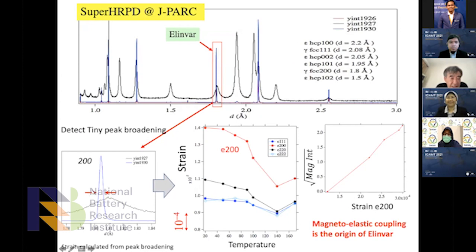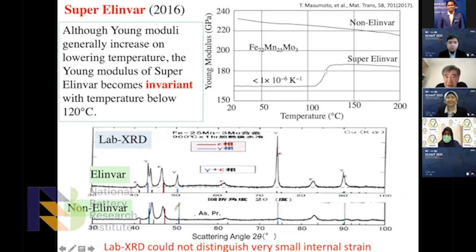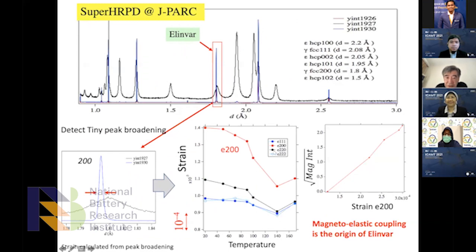Even with the sharp Invar diffraction pattern, we can observe broadening. Enlarging the peak, we can analyze the strain from the peak width. This shows the temperature dependence of peak width, converted to strain. Strain increases like this, with the onset of the Invar property starting at 120 degrees. We also measured the amount of strain and the magnetic peak intensity — the square of the magnetic intensity is proportional to the strain.